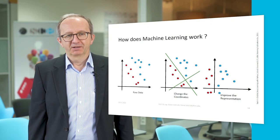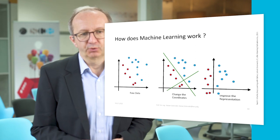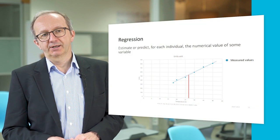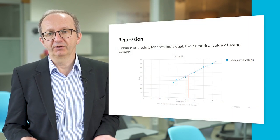So what is embedded in machine learning? We start with some raw data where it may be difficult to find a clear separation between two groups. We can change the coordinates, and we slowly begin to see a solution. Finally, if we normalize everything, we can see a clear separation between the red and the blue ones. This is how many machine learning approaches work — for example, regression, where we estimate or predict the numerical value of some variable.